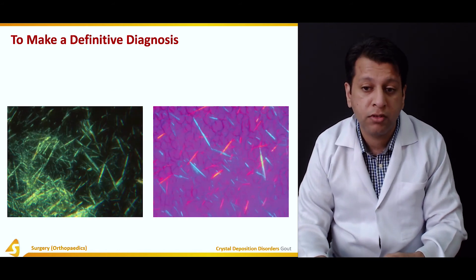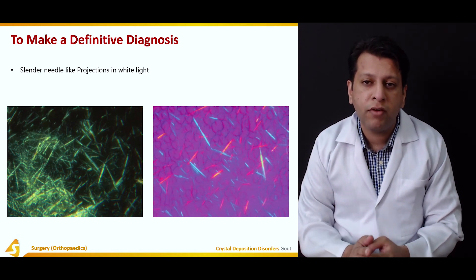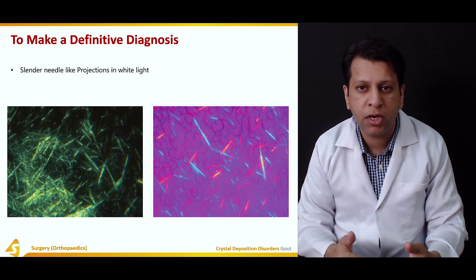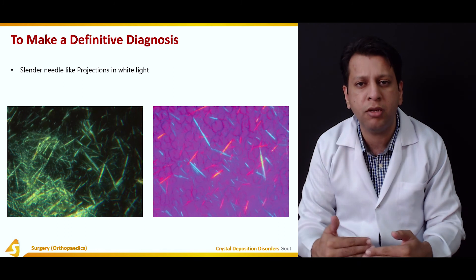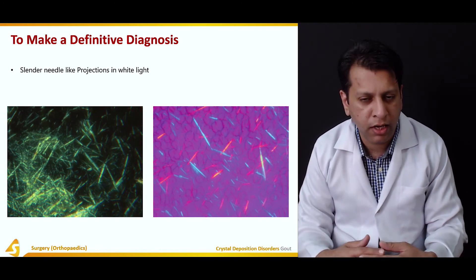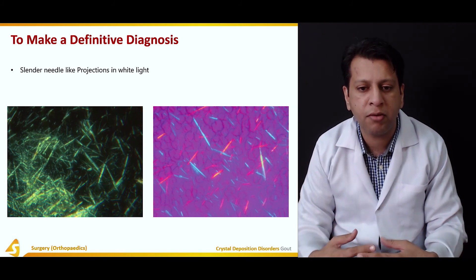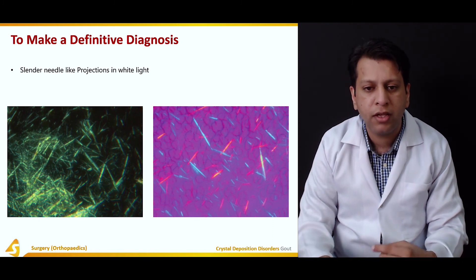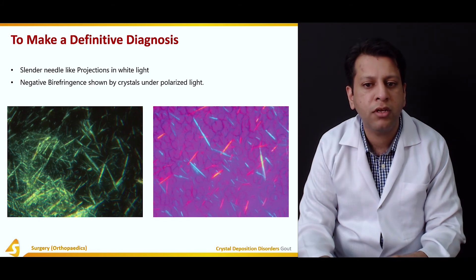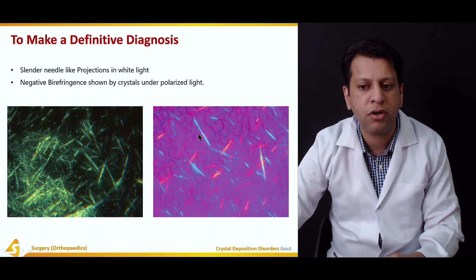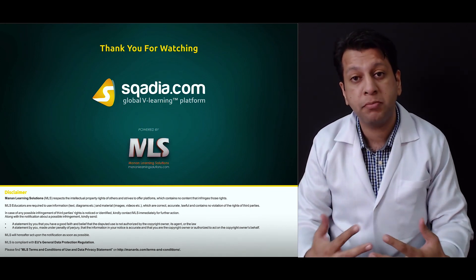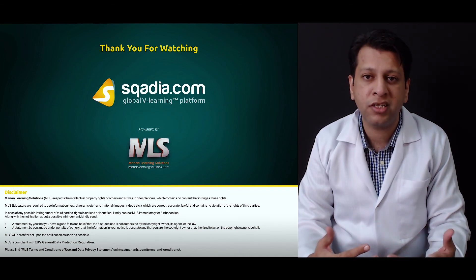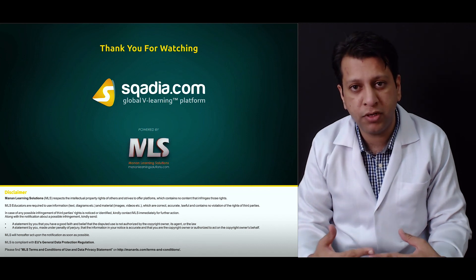For a definitive diagnosis: just as you cannot confirm infection without seeing microorganisms, you cannot confirm gout without seeing monosodium urate crystals. These are not visible to the naked eye or simple light microscope — higher magnification is needed with polarized light. Under bipolarized light, the slender needle-like crystals appear white and show negative birefringence. Once we make the diagnosis — when a patient presents with acute symptoms and increased uric acid levels — we must proceed to management of gout.